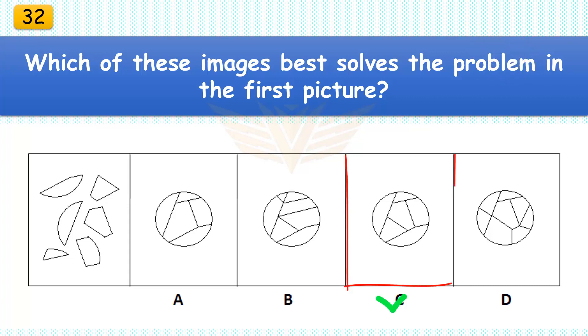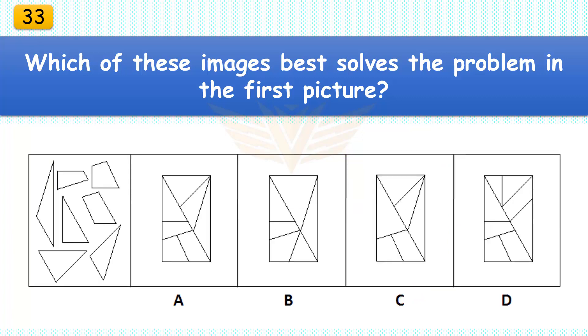Which of these images best solves the problem in the first picture? The correct answer is C. There are six pieces in the assembled puzzle.